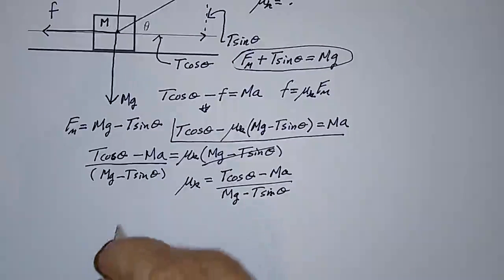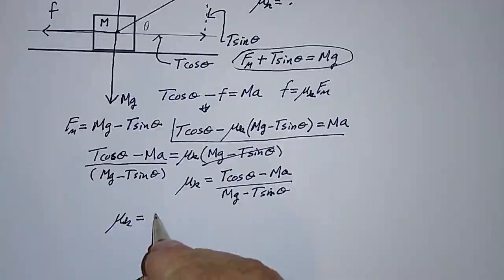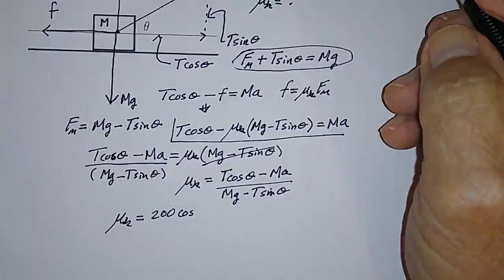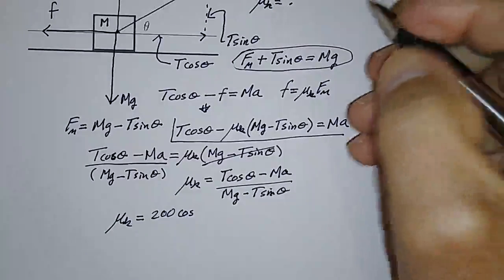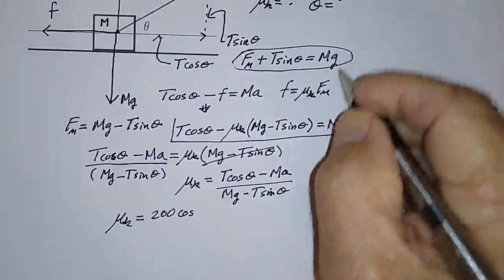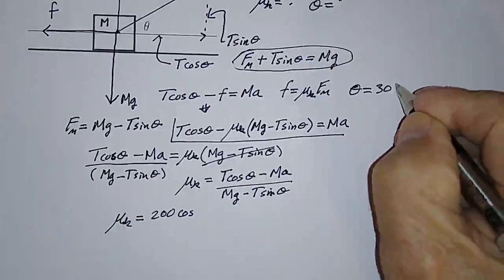And if I plug in the numbers, mu sub k is equal to T, which is 200 times the cosine. I didn't say what theta is. Let's make it easy. Let's make theta equal 30 degrees.